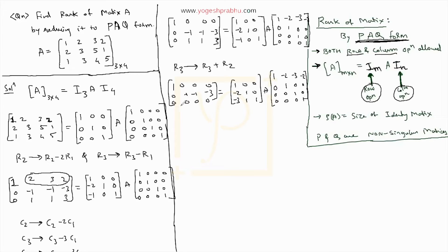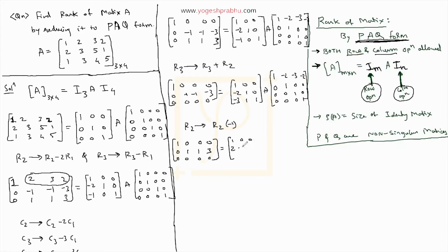Next, to make the pivot in row 2 positive, we do R2 becomes R2 times minus 1. The matrix A portion becomes: row 1 is 1 0 0 0, row 2 becomes 0 1 1 3, row 3 is 0 0 0 0. On the I₃ matrix, multiplying row 2 by minus 1 gives: 2 minus 1 0. The I₄ matrix stays the same since this is a row operation.